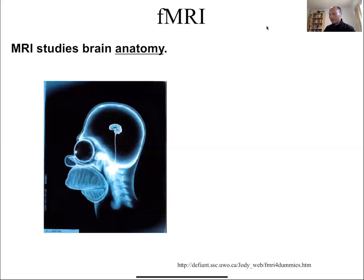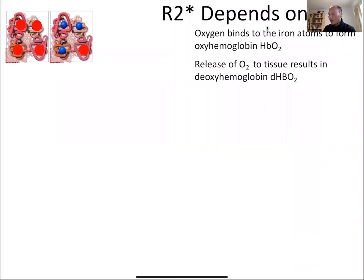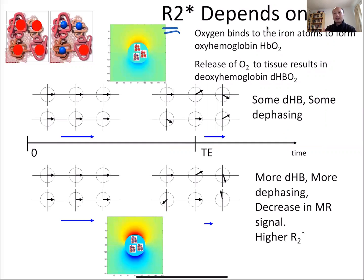As we discussed last time, the main idea is that we are going to use MRI for functional MRI to study brain function. We mostly focus on R2 star, which is the relaxation rate, and that depends on deoxyhemoglobin. As the amount of deoxyhemoglobin increases, that leads to more magnetic field inhomogeneities, therefore more dephasing of the spins, a decrease in MR signal, and the rate of decay increases.